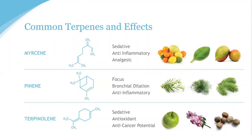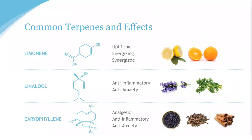Limonene is one of the more widely used terpenes, with a long history of medical benefits and applications. As the name suggests, this citrusy terpene is most commonly found in the peels of citrus plants. It's studied for its effects on mood, depression, and anxiety, as well as other conditions. Limonene is what gives cannabis strains like Sour Tangie or Super Lemon Haze their punchy citrusy flavor. It also improves the absorption of other terpenes, making it yet another player in the entourage effect.